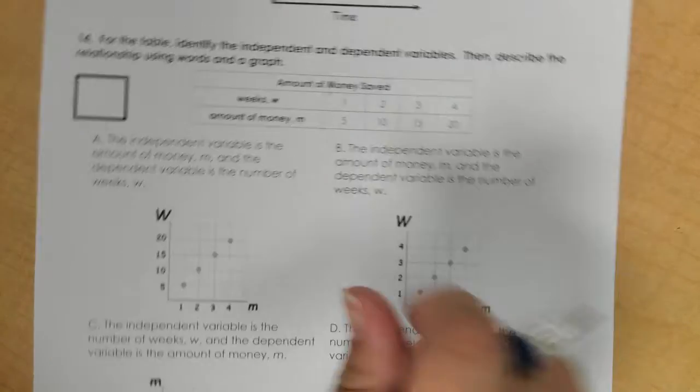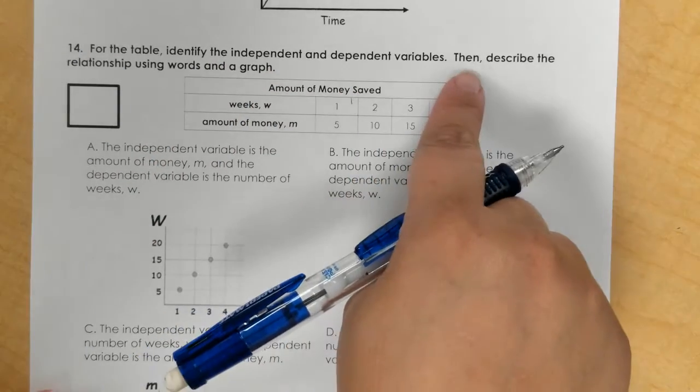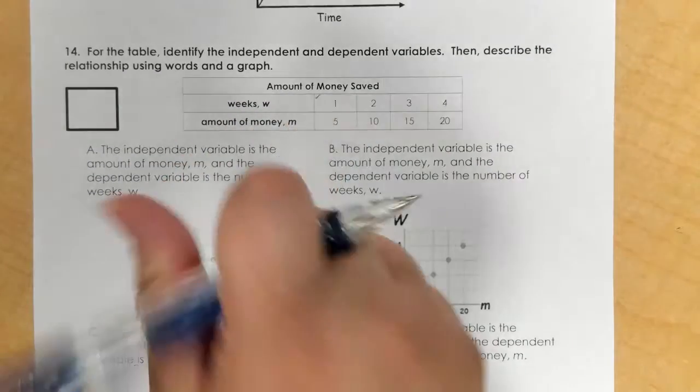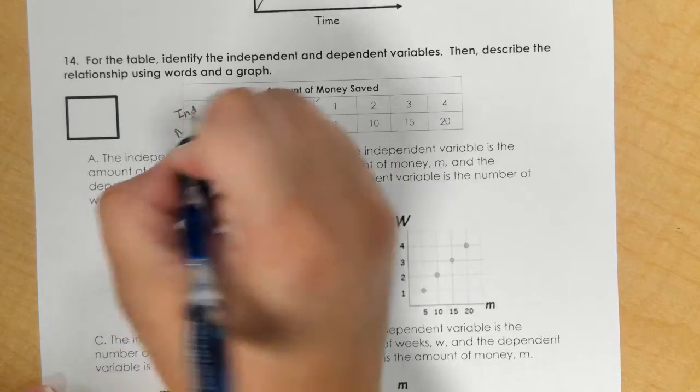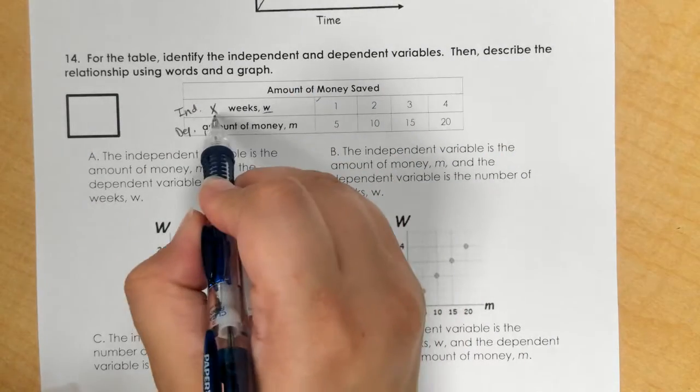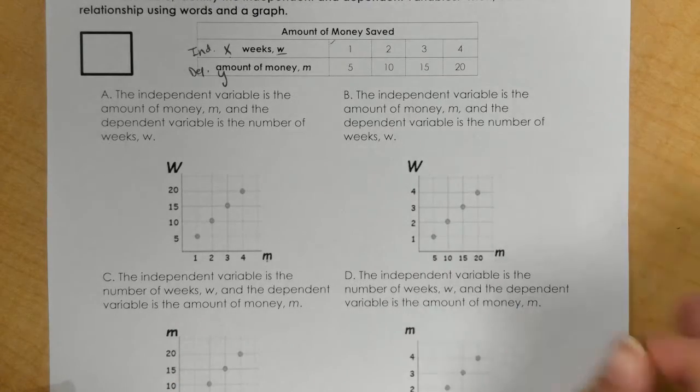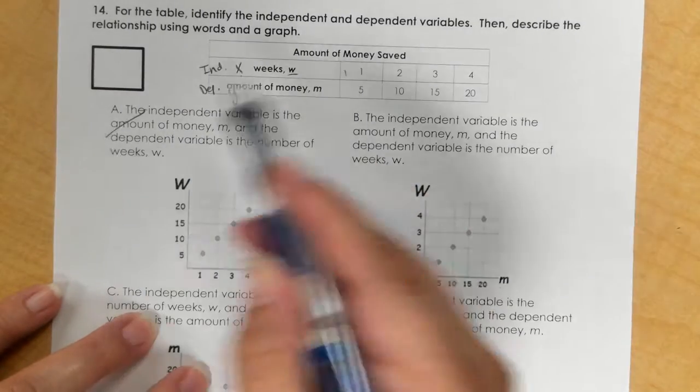Now for the table, identify the independent and dependent variables. We have our independent and dependent, which is x and y. So w has to be on the x-axis. I check my graphs - w, nope. W, nope. Yes, yes. So I know it's not A and it's not B.